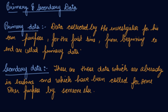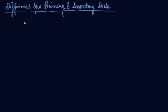So these are your secondary data. The sources of secondary data are published or unpublished sources, whereas your primary data includes sources such as questionnaires, schedules, direct personal investigation, and indirect oral investigations. We will be studying methods of primary data collection and methods of secondary data collection in the coming video.